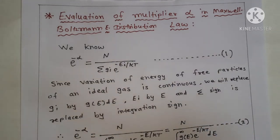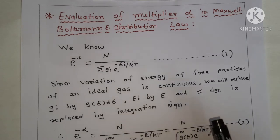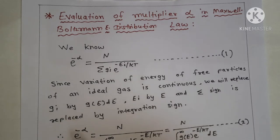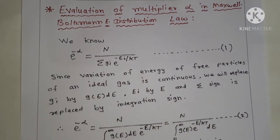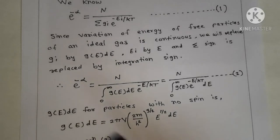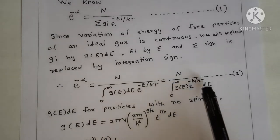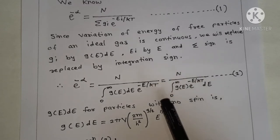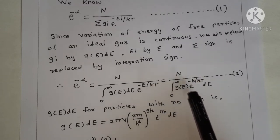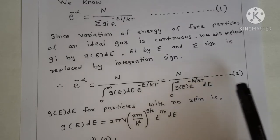Since variation of energy of free particles of an ideal gas is continuous, we will replace g_i by g(e)de, we will replace e_i by e, and the summation sign is replaced by an integration sign. So we can write e raised to minus alpha is equal to n upon the integral from 0 to infinity of g(e) e raised to minus e upon kT de. Equation second.